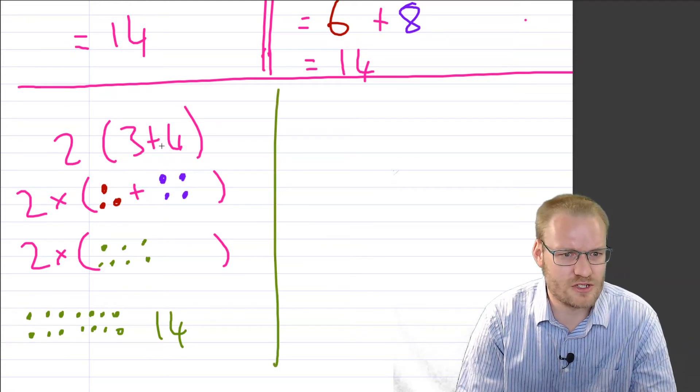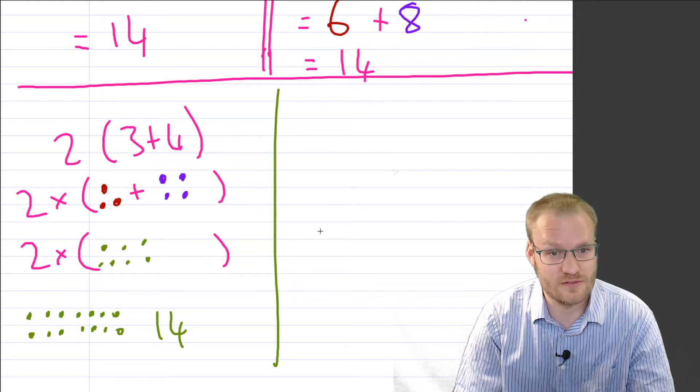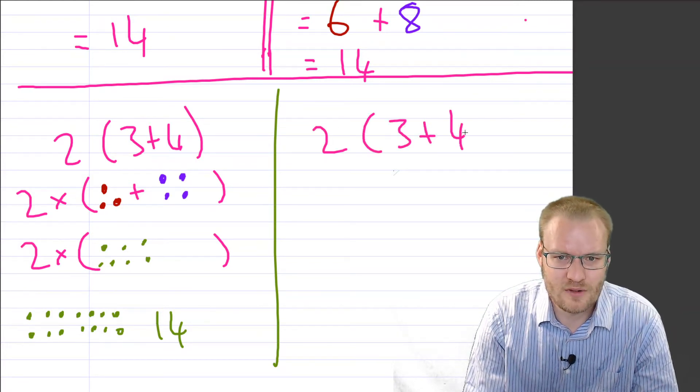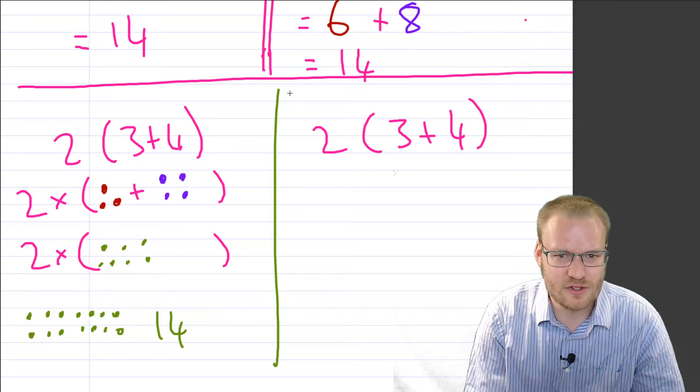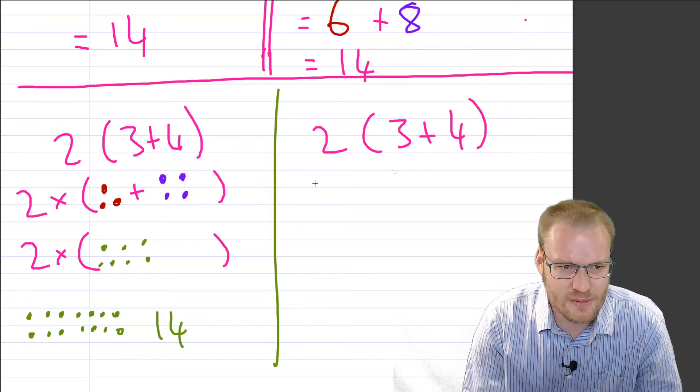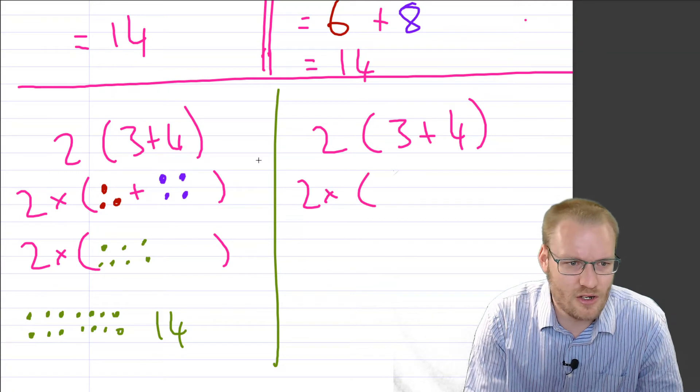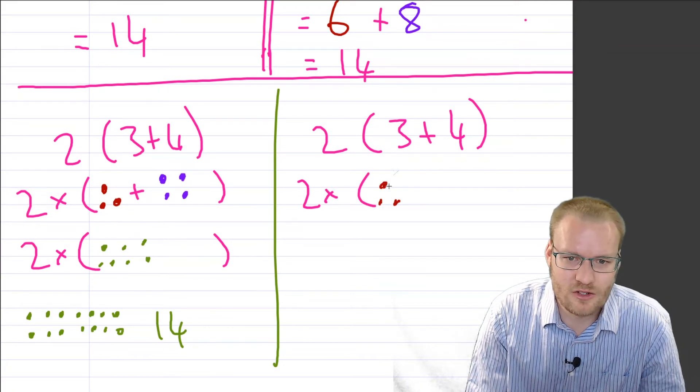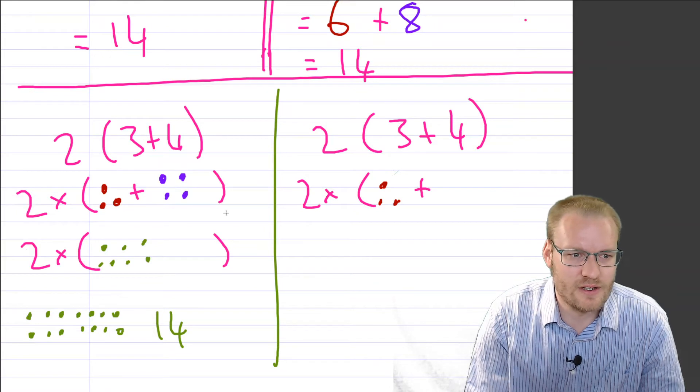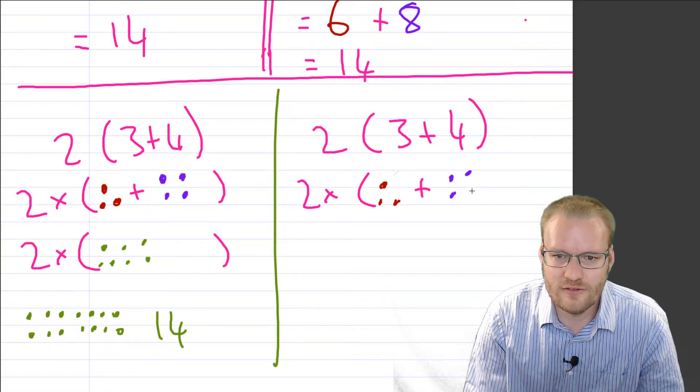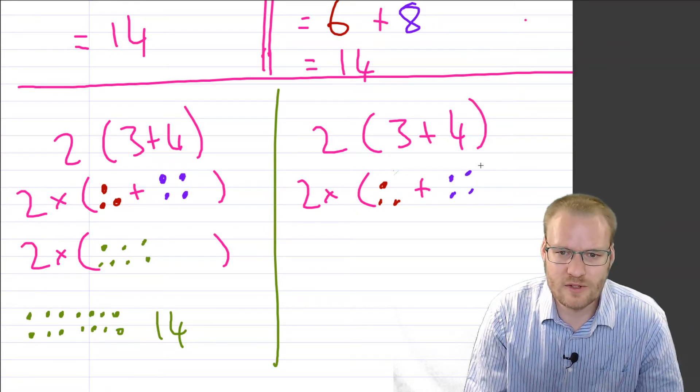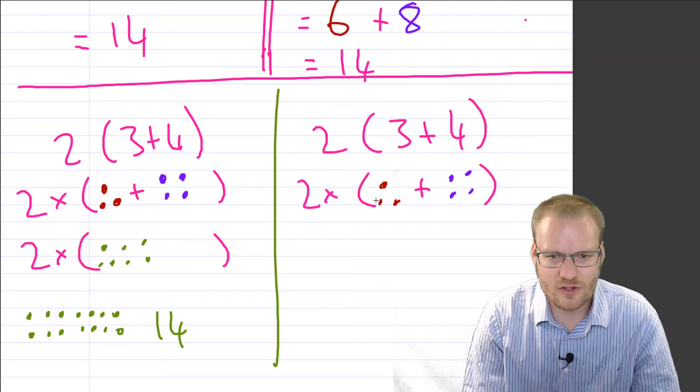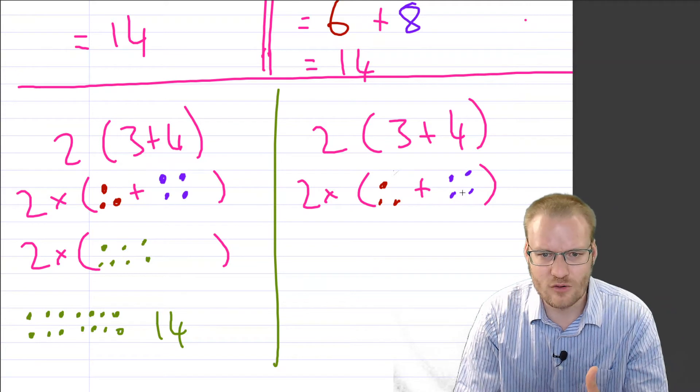Now let's look at this other way of doing it and say, my claim is you can distribute this in. So instead of, same idea, you've got 2 lots of 3 plus you're adding to that a lot of 4. And we're saying, well, we can distribute this. So we can say, well, we've got 2 lots of 3 and 4. So in other words, we've got 2 lots of 3.